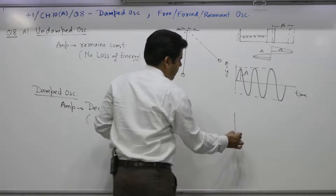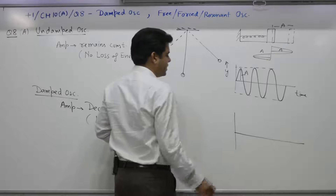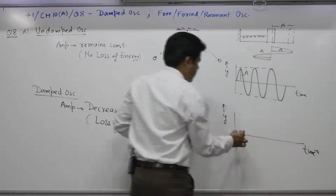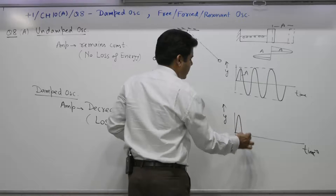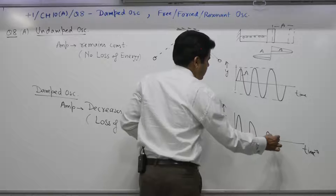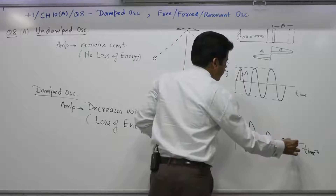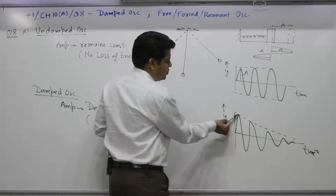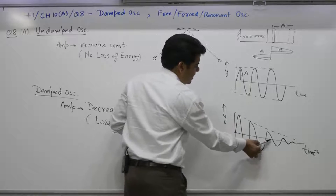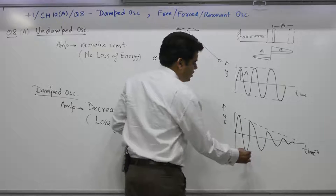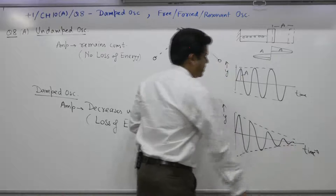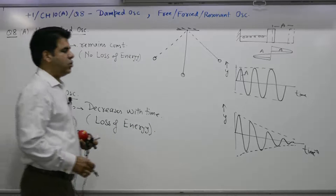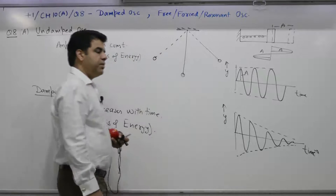The graph for damped oscillation: displacement as a function of time. In the beginning, amplitude is high. As time goes on, the amplitude decreases — suppose it starts at 10, then 8, 5, 2, 1. Amplitude keeps on decreasing. Such an oscillation is known as damped oscillation. All practical oscillations are damped oscillations.